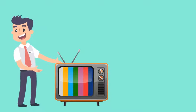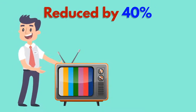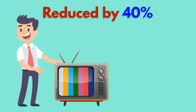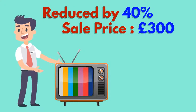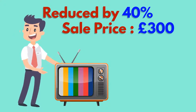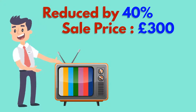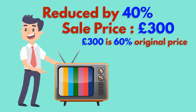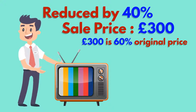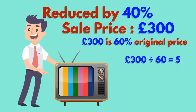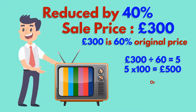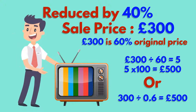The normal price of a TV is reduced by 40% in a sale. The sale price is £300. What is the normal price? Remember, £300 is 60% of the original value. You could divide 300 by 60 to give 1%, then multiply by 100 to get the full amount. The original price is £500.